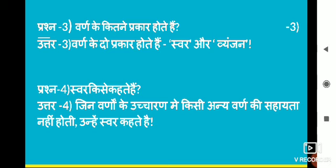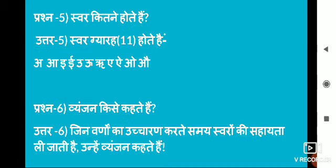Varnon ke kitne prakar hote hain? (How many types of Varn are there?) Varnon ke do prakar hote hain: Swar aur Vyanjan. Swar kise kahate hain? Jin Varnon ke uchcharaN mein kisi anya Varn ki sahayata nahi leni hoti, ya jin Varnon ko bolne ke liye kisi anya Varn ki zaroorat nahi hoti, unhe Swar kahate hain.